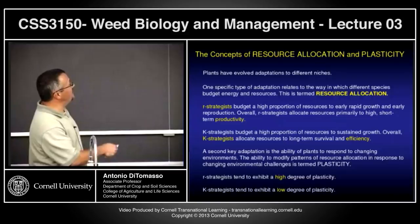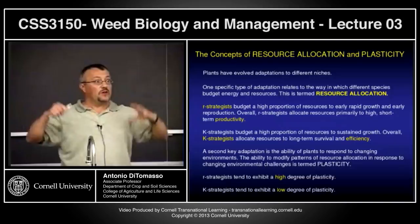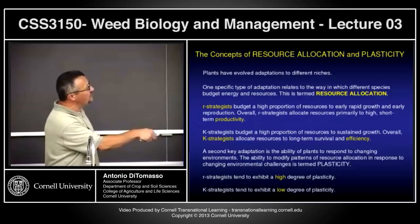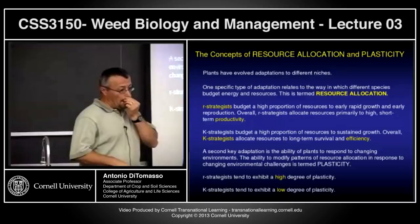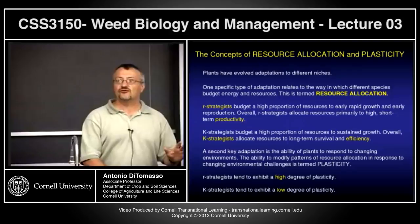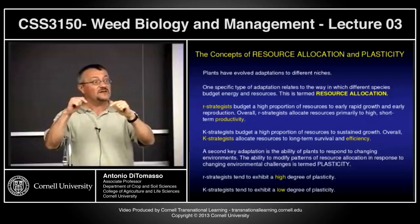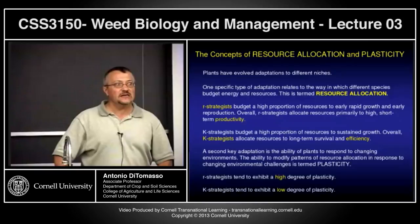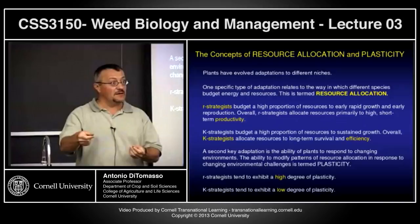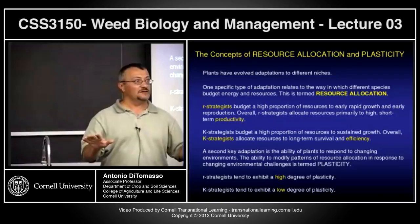R-selected species allocate overall resources primarily to high short-term productivity. K-selected species invest in sustained growth — biomass above ground, below ground, trunk — for long-term survival and efficiency; they're not into rapid growth and reproduction. Plasticity — the adaptation to changing environments — is something plants can do. For example, leaves inside a shaded maple tree tend to be really big and very thin — a classic shade adaptation. Outer leaves have very thick cuticles, behaving almost like desert plants because they're hit by sunlight.